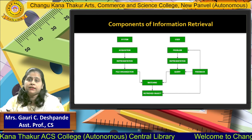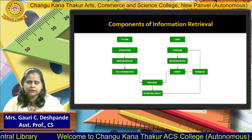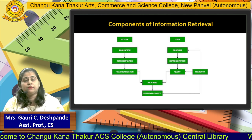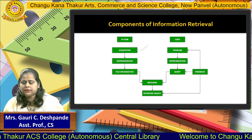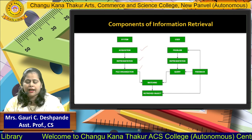Now let's look at the components of IR. If you want to build your own IR system, there are two main components: the system and the user. To create the system, we have to define some processes. The first process is acquisition, the second is representation, and the third is file organization. These are the three important processes of the system.